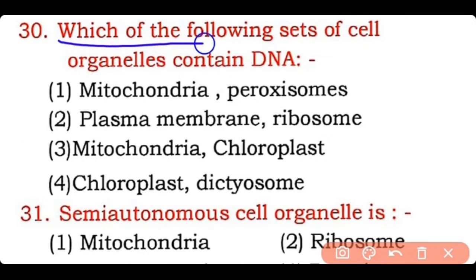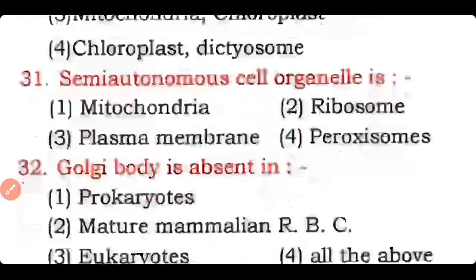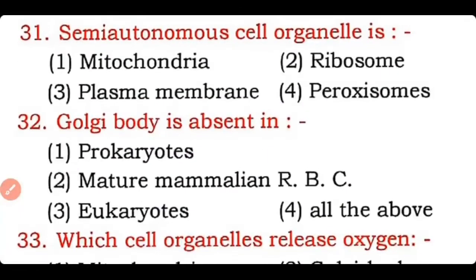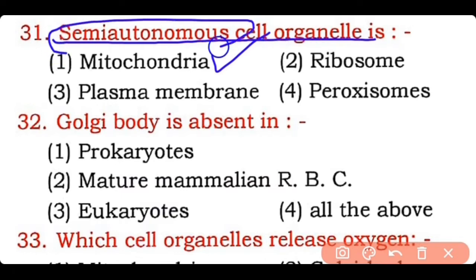Question 30: Which set of cell organelles contains DNA — mitochondria and peroxisome, plasma membrane and ribosome, or mitochondria and chloroplasts? Correct answer is mitochondria and chloroplasts, which have their own DNA. Question 31: Which is a semi-autonomous cell organelle — mitochondria, ribosome, plasma membrane, or peroxisome? Correct answer is option one — mitochondria is known as a semi-autonomous organelle because it has its own DNA.